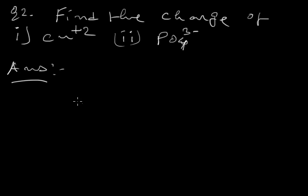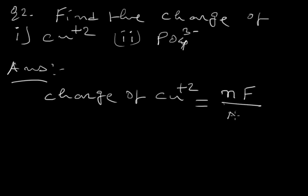The charge of Cu²⁺ is equal to n × F divided by Na. Here n is the valency of the ion, F is Faraday, and Na is Avogadro's number.